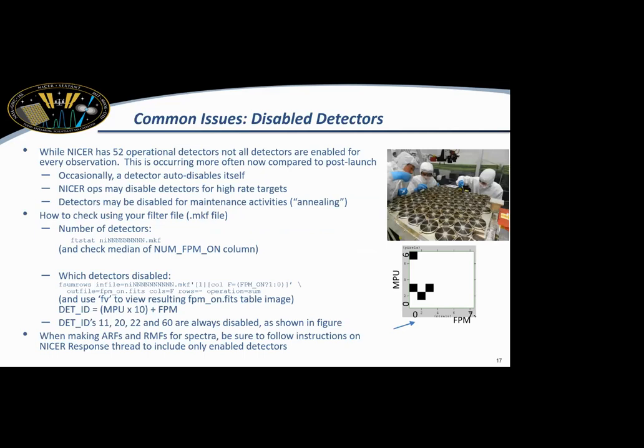So NICER, as we saw yesterday, has 52 detectors, four which were turned off before launch. You can see those in the bottom right here, which ones are turned off. But occasionally, certain detectors, for various reasons, will auto-disable themselves, or some may have higher count rates than others for one reason or another. And the pipeline actually screens for this and will remove those detectors, the data from those detectors from your dataset. So you don't have to worry about that. You can check the number of detectors in the MKF file, but that's not really important for deciding on NICER data.